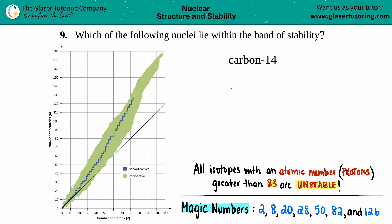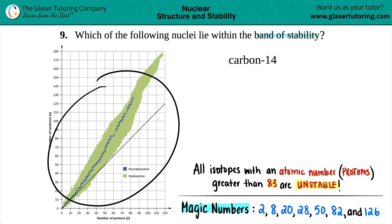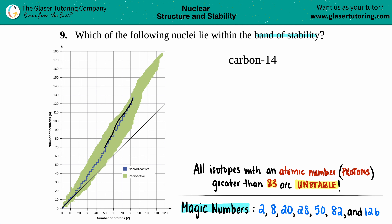Number nine: which of the following nuclei lie within the band of stability? We have carbon-14. We need to find out if this is going to be stable or not. If it's stable, it's within the band of stability. Here is the band of stability — there are only a select few blue ones that are stable isotopes.